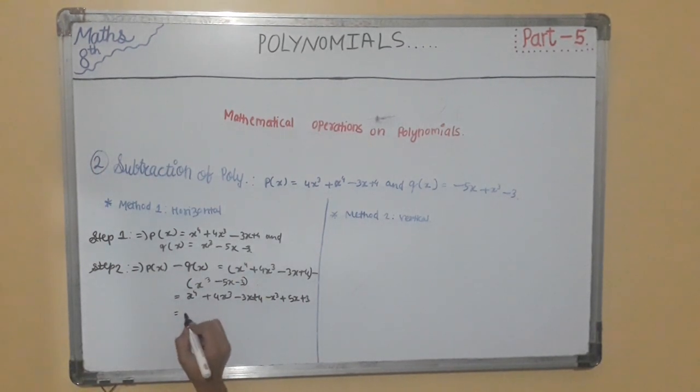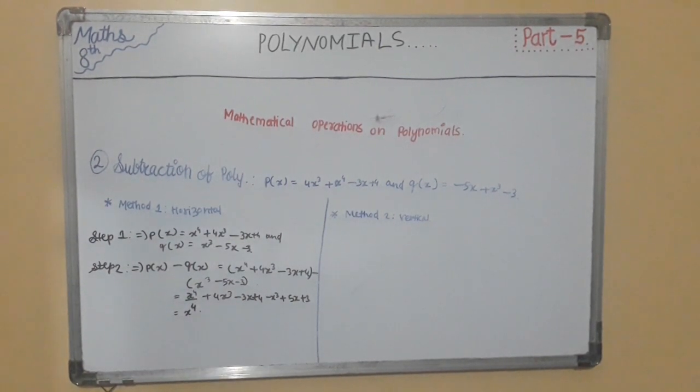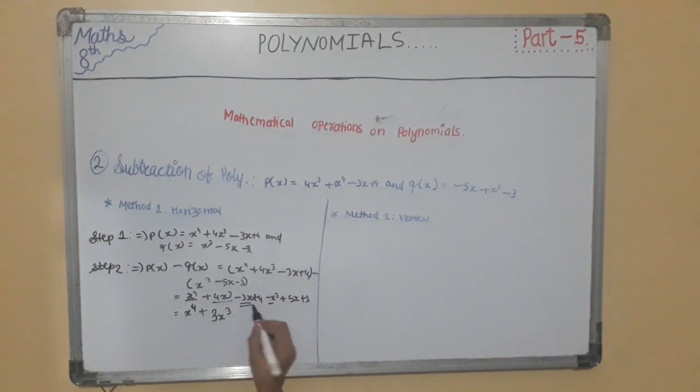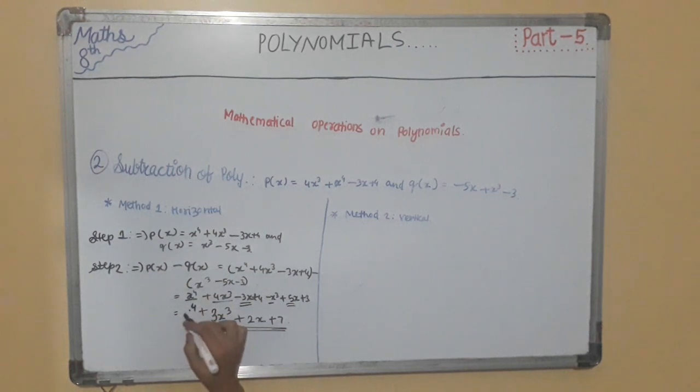We will simplify. The answer will become x⁴. We have to subtract or add by the like terms only. x⁴ as it is because it doesn't have any pair. 4x³ and -x³, these both are like terms so it will become +3x³. -3x and +5x will become +2x. 4 and 3 will become +7. These are the final terms and this is the final answer: x⁴ + 3x³ + 2x + 7.